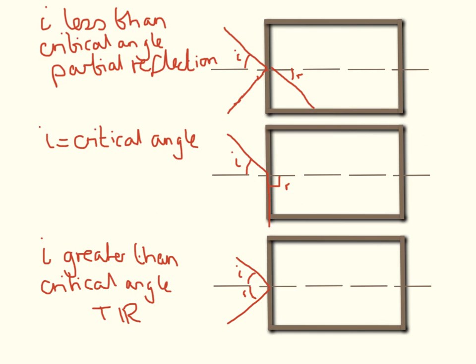So the next thing we need to know is the critical angle. When I is less than the critical angle, we have partial reflection, we have some being reflected back and some being transmitted and refracted. When I is equal to the critical angle, it all travels along the line here. And when I is greater than the critical angle, we have total internal reflection.